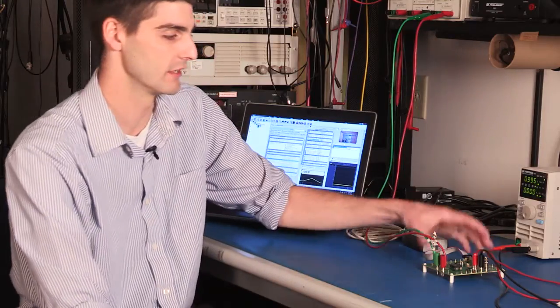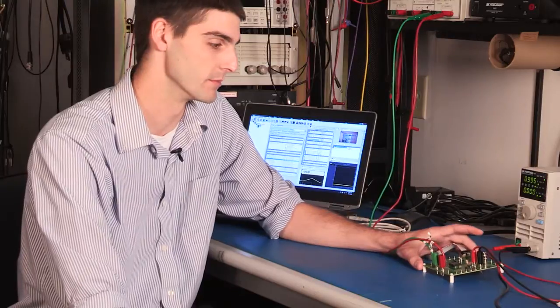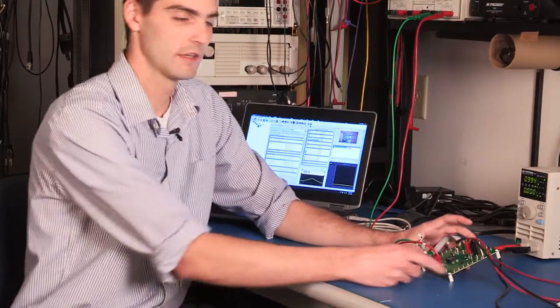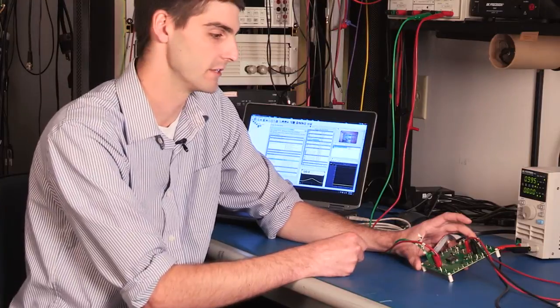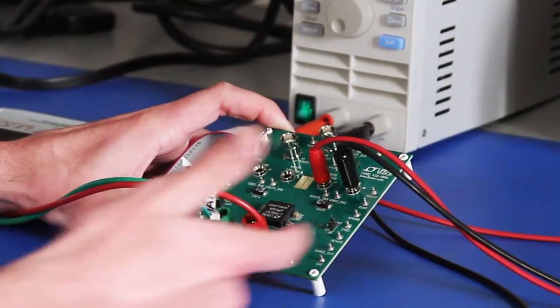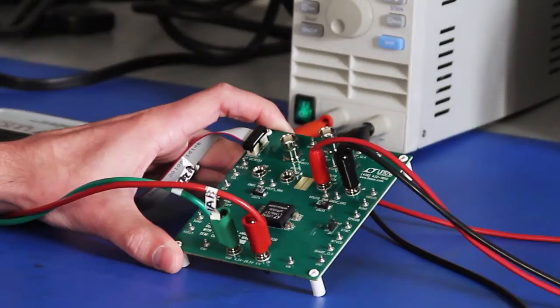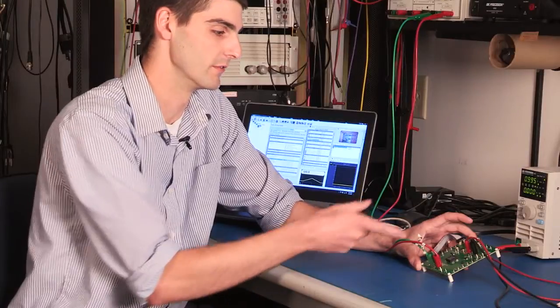DC1811 is the evaluation kit provided by Linear Technology for this module. The kit includes the eval board showcasing the LTM 4676. As you can see, the board breaks out a number of useful pins and has a couple of different connection points for VIN and VOUT.